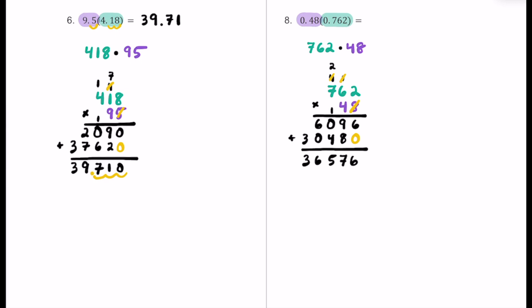How many decimal places did we ignore? We ignored two from 0.48 and three more from 0.762 — a total of five decimal places. So starting from the right, we count five places to the left. Our product is 0.36576. Reading this properly: the places are tenths, hundredths, thousandths, ten-thousandths, and hundred-thousandths. So you would read this as 36,576 hundred-thousandths. That's the correct way to say this decimal value.